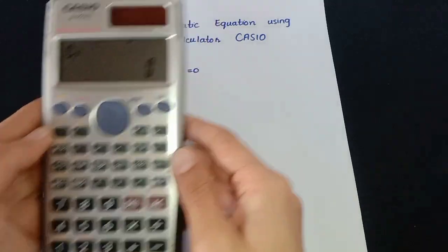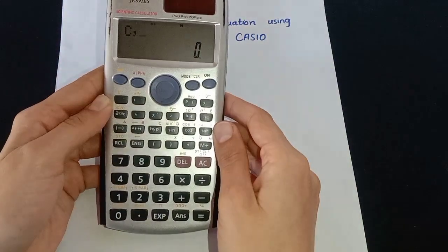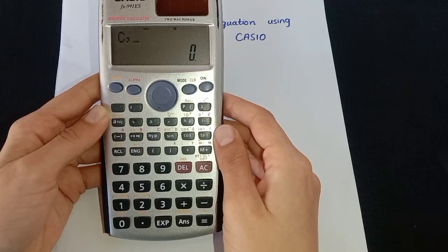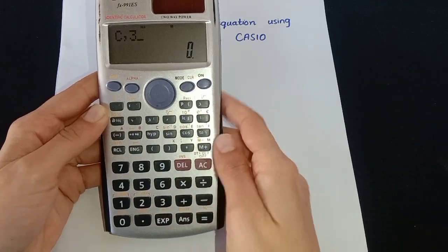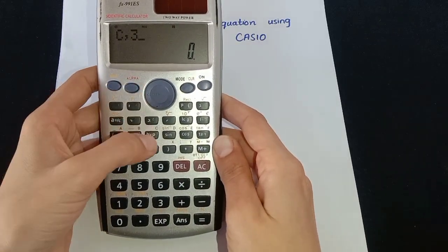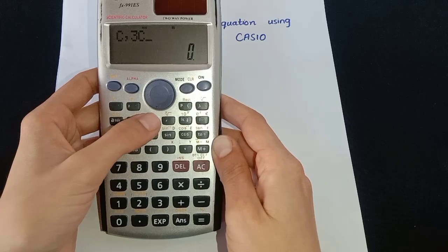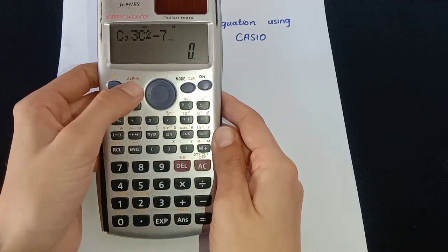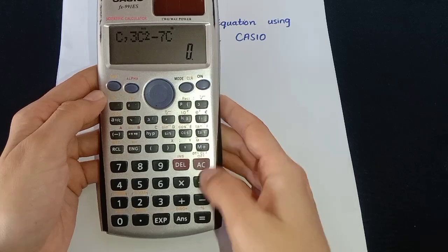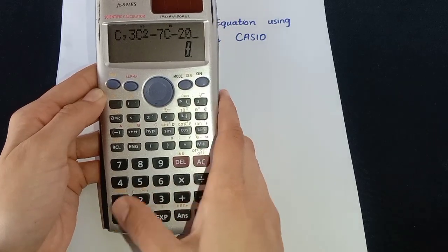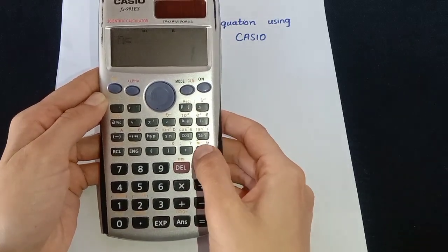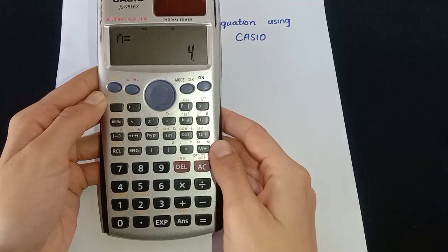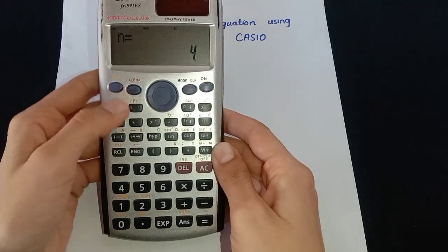Now we have to type the quadratic equation. Press 3, then alpha, then hyperbolic, and then square, minus 7, then again press alpha key, hyperbolic key, minus 20. Then press M plus key four times, then press shift key.